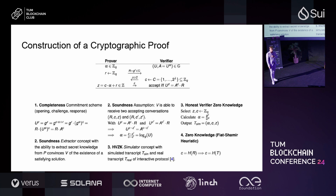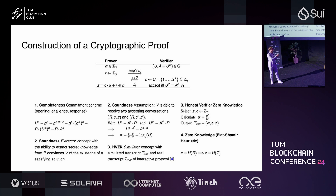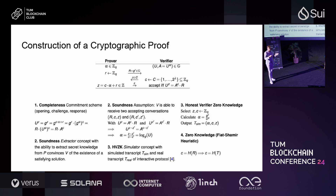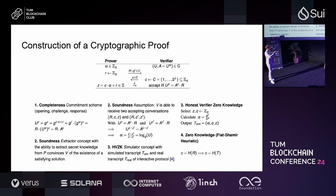This dedicated proof system can only prove this exponentiation function. What we actually want is to perform arbitrary proofs on whatever data we have, requiring better constructions. The first property, completeness, simply means an honest prover is able to convince an honest verifier — there must exist a computation trace that lets the verifier become convinced of knowledge of this alpha value.